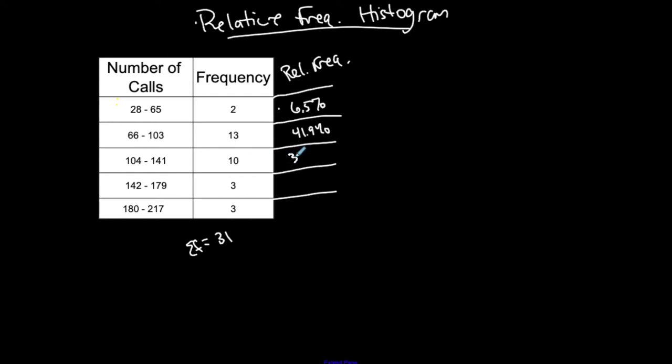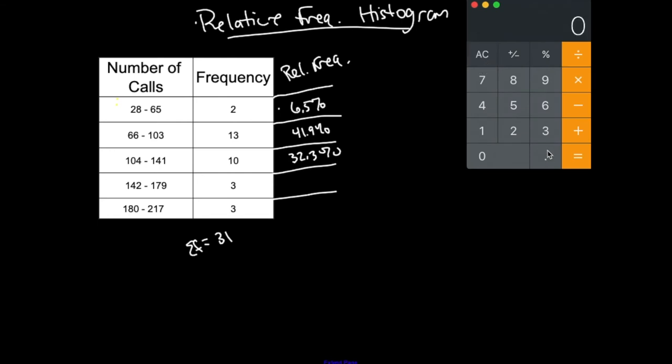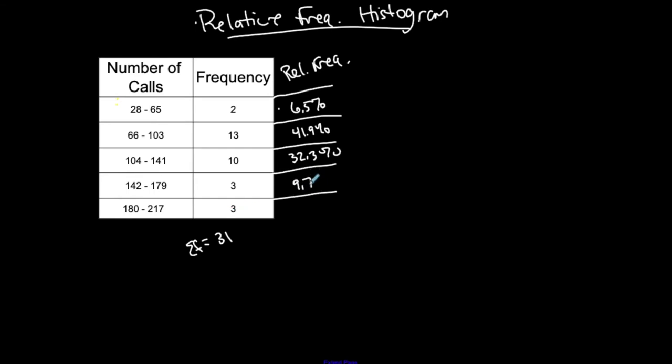32.3% approximately, rounded. And then 3 out of 31 is 9.7-ish. So 9.7% and 9.7%. And then if I add up this column, I'm expecting it to add up to 100, right? 100% because it should represent 100% of the classes.